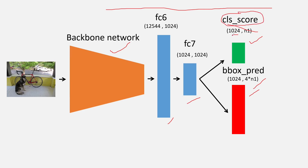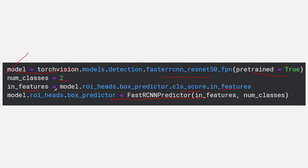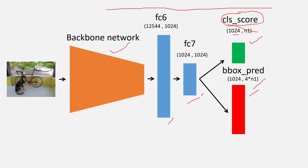CLS score has in_features of 1024 and out_features of n1, where n1 is the number of classes plus one for background. For example, cat versus dog gives two classes plus one background, so n1 equals three. For the bounding box predictor, out_features is four times n1 — so four times three equals 12. Both layers share the same in_features of 1024 because they both come from FC7.